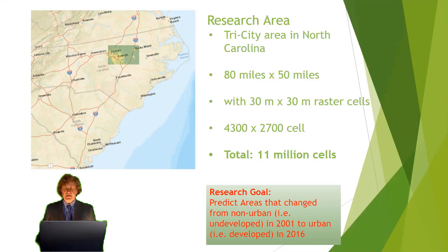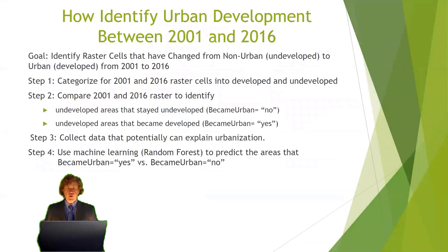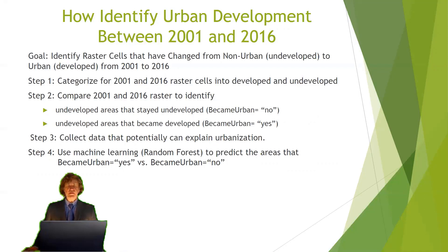The idea behind this is if we have a working prediction model, we can use the same model to predict the future. Our approach follows four steps. The first step is we categorize 2001 and 2016 raster cells into developed or undeveloped. Then we compare 2001 and 2016 to find out which cells changed from undeveloped to developed. In step three, we collect data that potentially can explain urbanization. Then we put everything together and use R to develop a machine learning model — a random forest model — to predict if a raster cell became urban, yes or no.